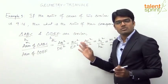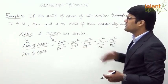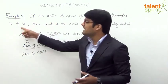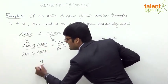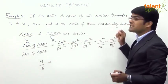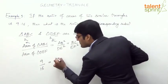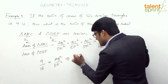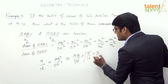So the ratio of areas equals the square of the corresponding sides, or the square of the heights, or the square of the medians. Now applying this: the ratio of areas is 9 to 16, so AB squared by DE squared equals 9 by 16. Taking the square root on both sides, the ratio AB by DE equals the square root of 9 by 16, which is 3 to 4.